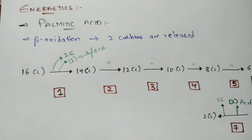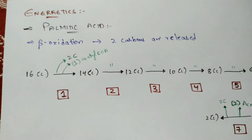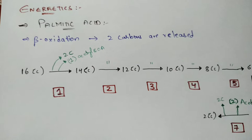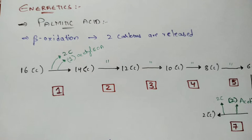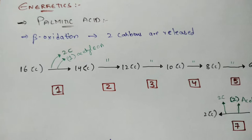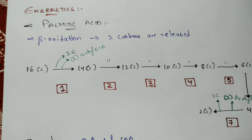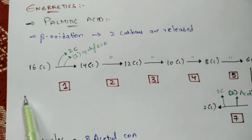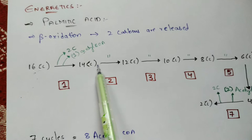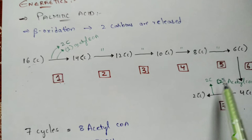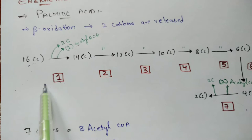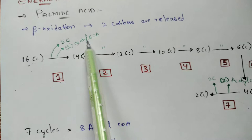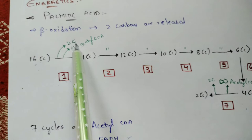Now let us discuss the energetics of the oxidation of fatty acids, using palmitic acid as the best example. Palmitic acid is a common saturated fatty acid present in animals, plants, and microorganisms. It is a 16-carbon compound, and when it undergoes beta oxidation, two carbons are released at each step. If you see the steps: one through seven cycles of beta oxidation take place.